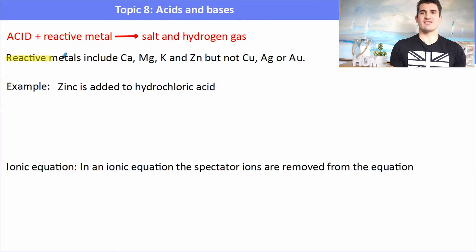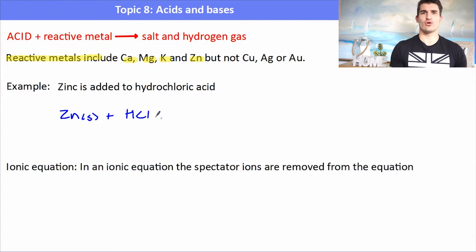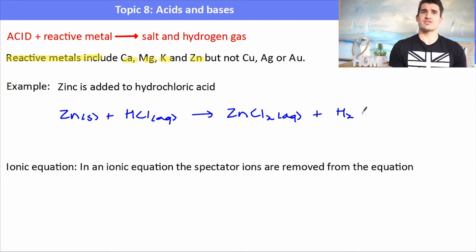The first type of reaction you need to know is acid reacting with a reactive metal. Reactive metals include calcium, magnesium, potassium, and zinc. Zinc can be added to hydrochloric acid — this is the pop test. The products will be a salt and hydrogen gas; you test the hydrogen gas with a flame to check for a pop. The salt is zinc chloride and the gas is H₂ — hydrogen gas always has the formula H₂.